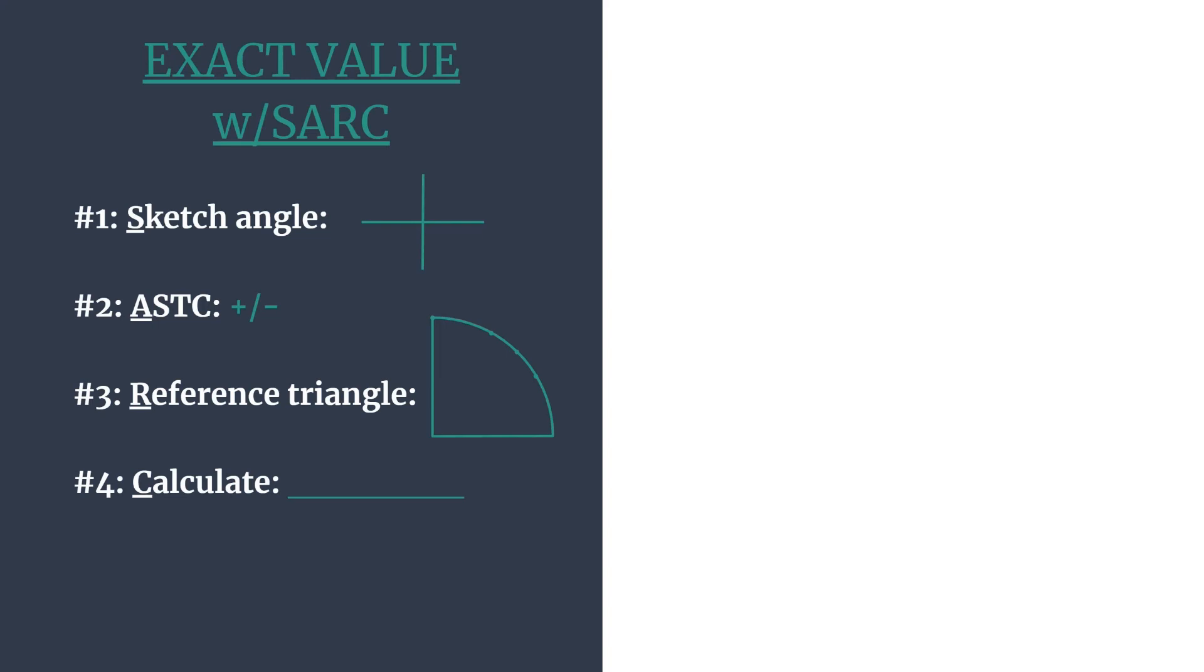So here's our outline of SARC, which is our acronym to keep all our steps in a nice order. First, we find the angle's terminal side. A stands for ASTC, which is our method for finding which trig functions are positive in each quadrant so that we can decide our final sign for our exact value.